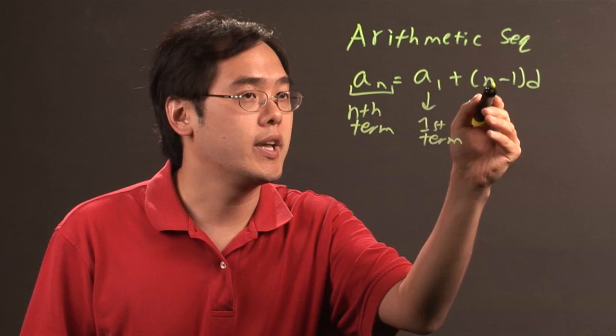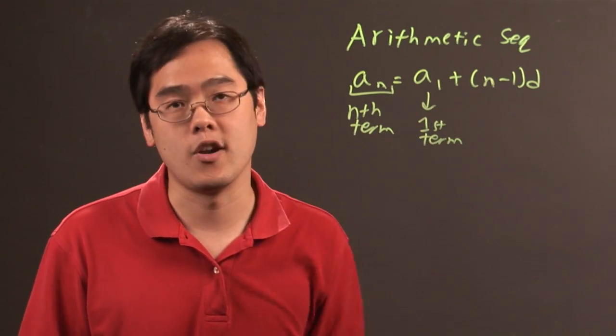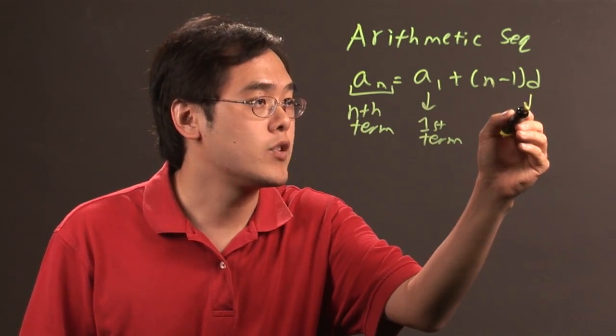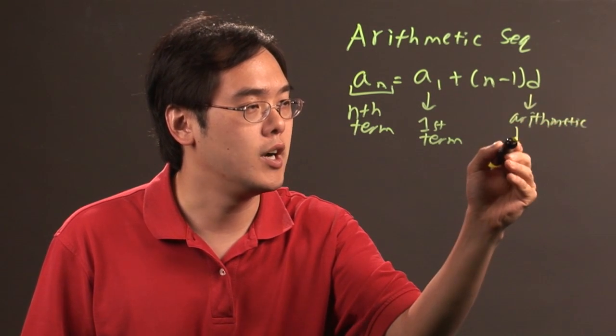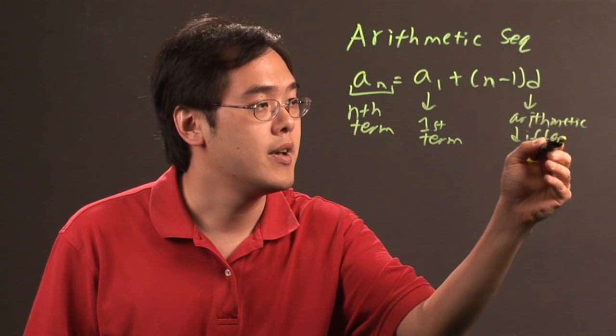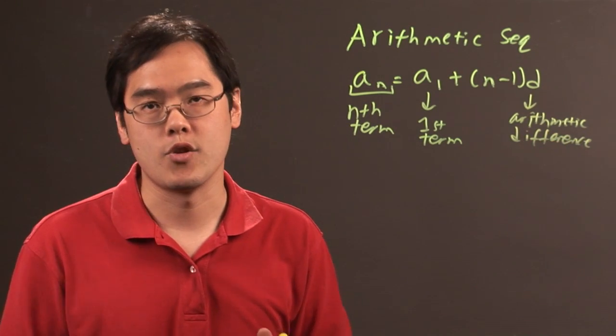n is related to this n. In other words, if you want to find the sixth term of a sequence, you plug in 6 here. d refers to the arithmetic difference, the number that separates the sequence.